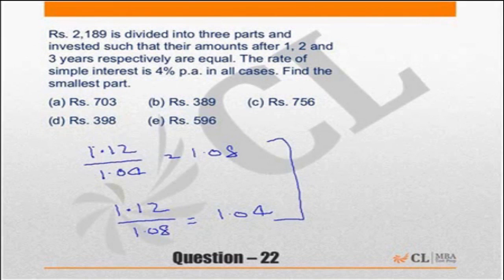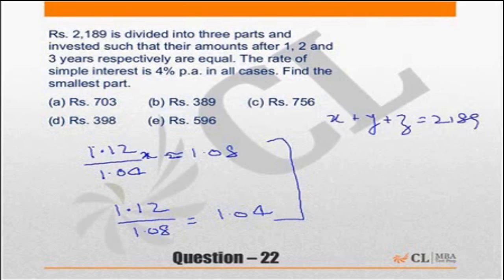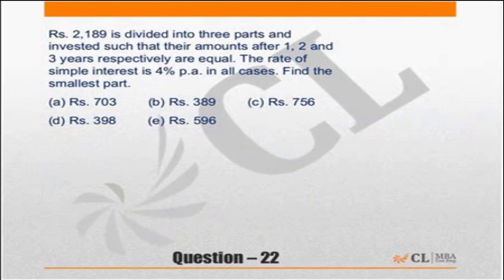Otherwise it's a simple question x plus y plus z is equal to 2,189. The first thing is, the three parts are x, y and z. So x plus y plus z has to be 2,189. This is the question. I am saying x is the smallest part. This is the smallest. This is the biggest.